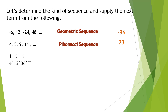Number 3: 1/4, 1/12, 1/36. You might think this is harmonic, but it is not. From 4 becoming 12, the difference is 8; from 12 becoming 36, the difference is 24 — not 8. For a harmonic sequence, the same number must be added to the denominator. Since the differences are different, this is not harmonic. Instead, this falls under a geometric sequence because the numbers are being multiplied by 1/3. The next number is 1/108.